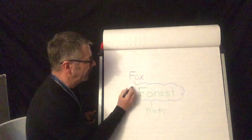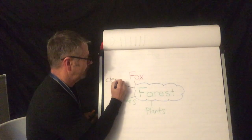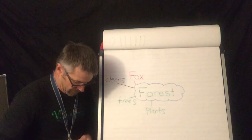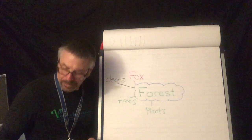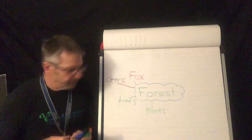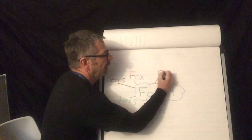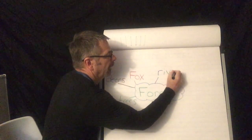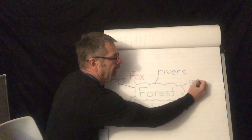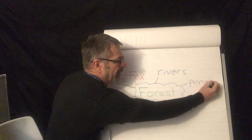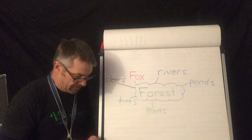What else do we have in the forest? Deer, yeah. Deers. What else? Yeah, rivers. Rivers. And we also might have ponds in the forest, maybe near a river. We have ponds. And what else?